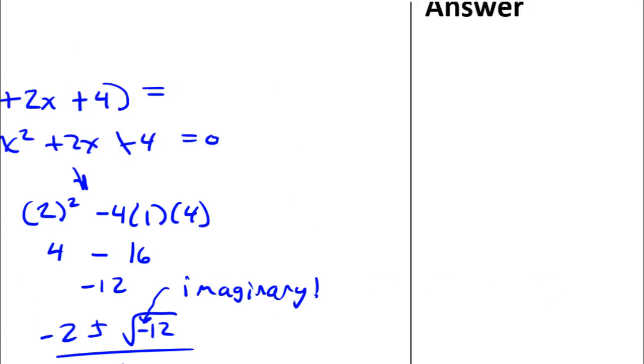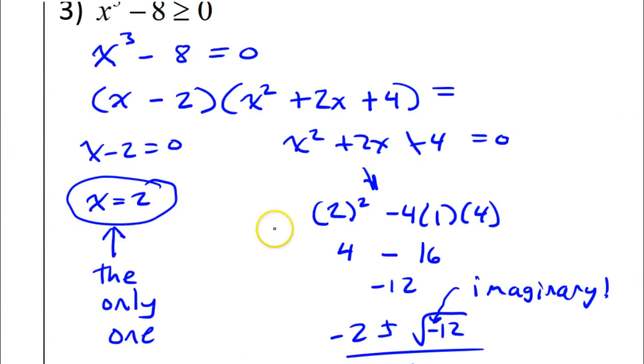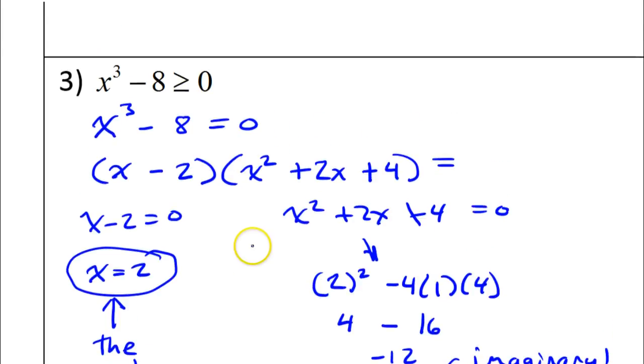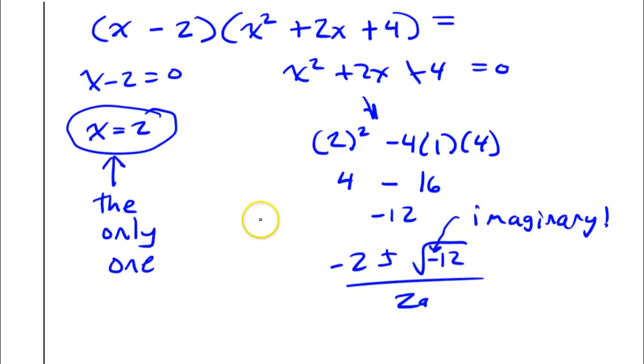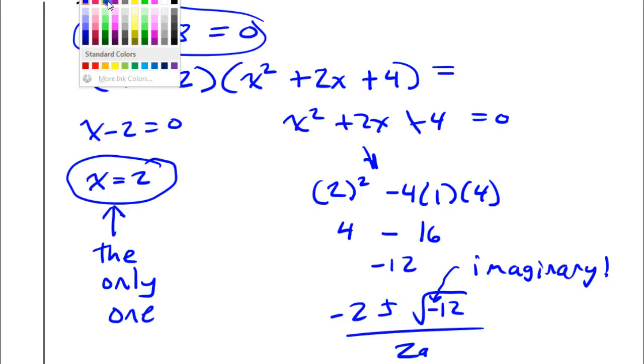So, I will take my positive two and graph it on a number line as my only critical value. So, there it is. Now, I mentioned that there were two ways that I could have done this. The other way is like this. So, let me go back to this point for a second.